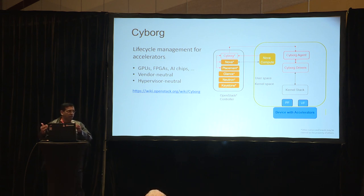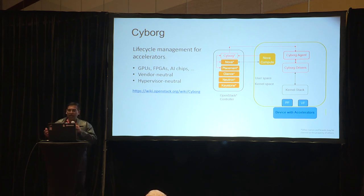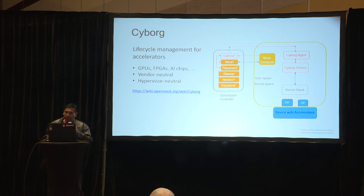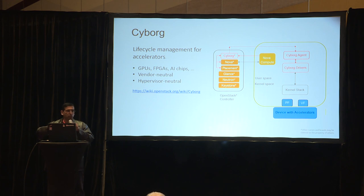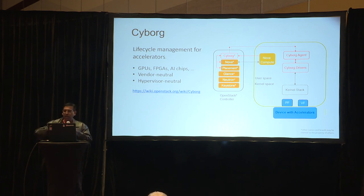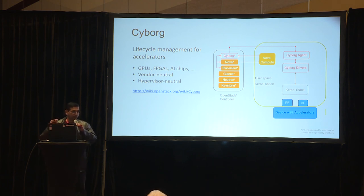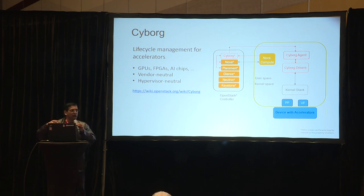Here's a quick overview of Cyborg. Basically, Cyborg is a service — it's vendor neutral, like pretty much any other OpenStack service, and it's also supposed to be hypervisor neutral. The way it works is that we have an API server and a controller, along with Nova, Neutron, and everybody else. We also have our database and a conductor, so it looks like a regular OpenStack project. We also have an agent running on every compute node, and that agent has a bunch of libraries called drivers.